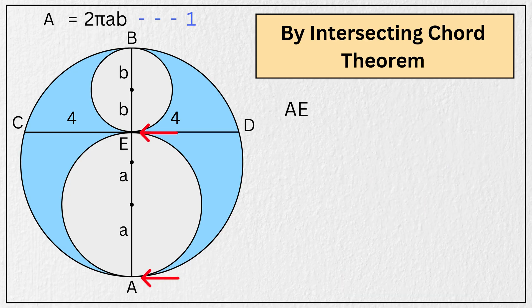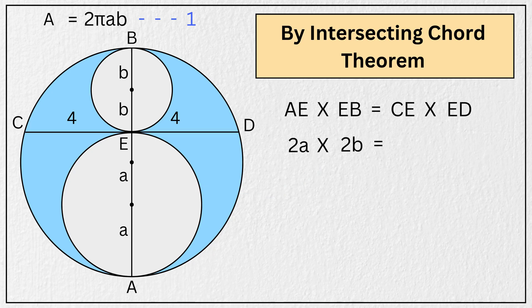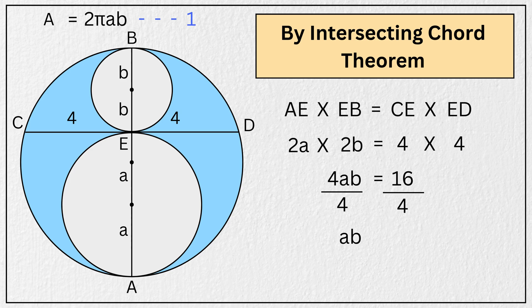That means this length AE multiplied by this length EB is equal to this length CE multiplied by this length ED. So substituting the values, we get 2A multiplied by 2B equals 4 multiplied by 4. And simplifying, we have 4AB equals 16. Again, dividing by 4 from both sides, we get AB equals 4 units.